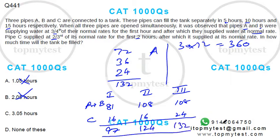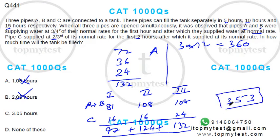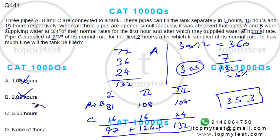Adding it up: hour one fills 97, hour two fills 124, that's 97 + 124 = 221, plus 132 for hour three gives 353 liters total after three hours. They still need 7 more liters, which at 132 liters per hour is roughly 5% of an hour — so the total time is approximately 3.05 hours. Option C is the correct choice. That finishes this question.